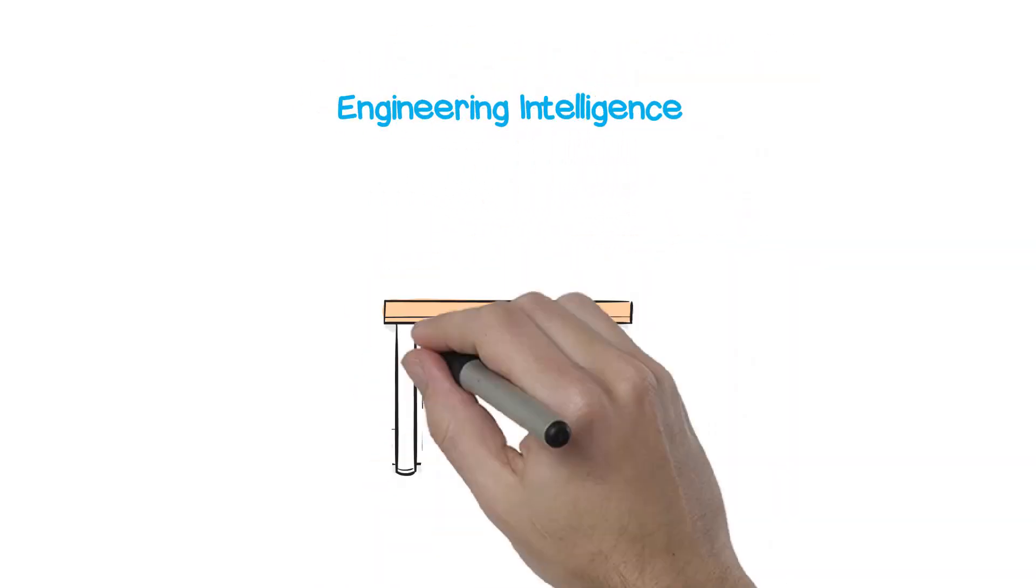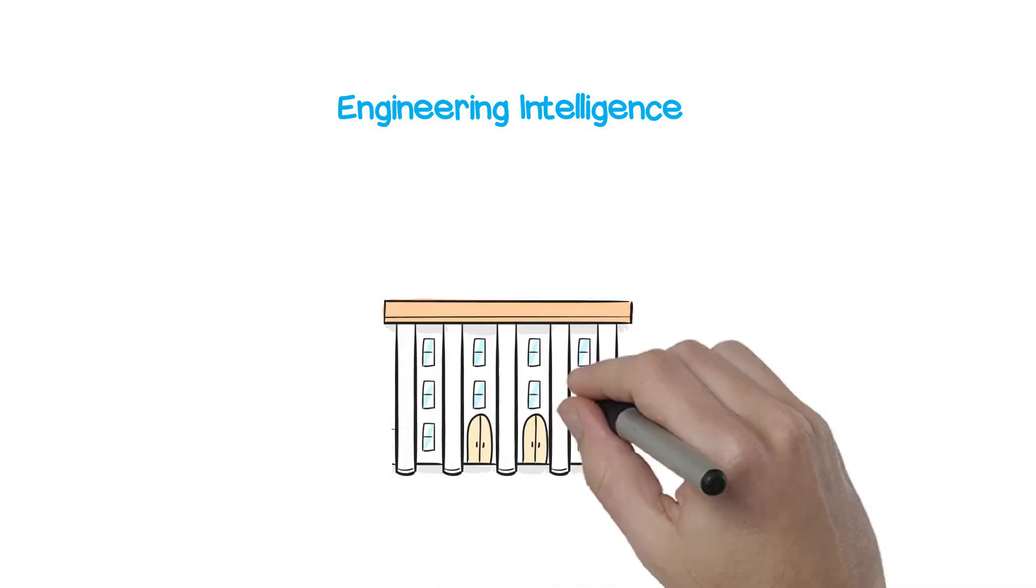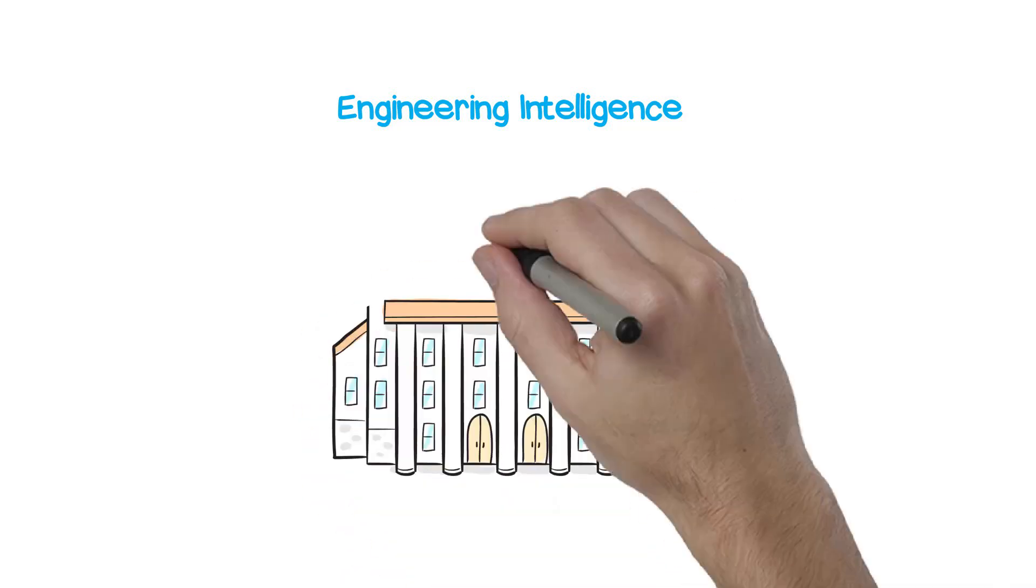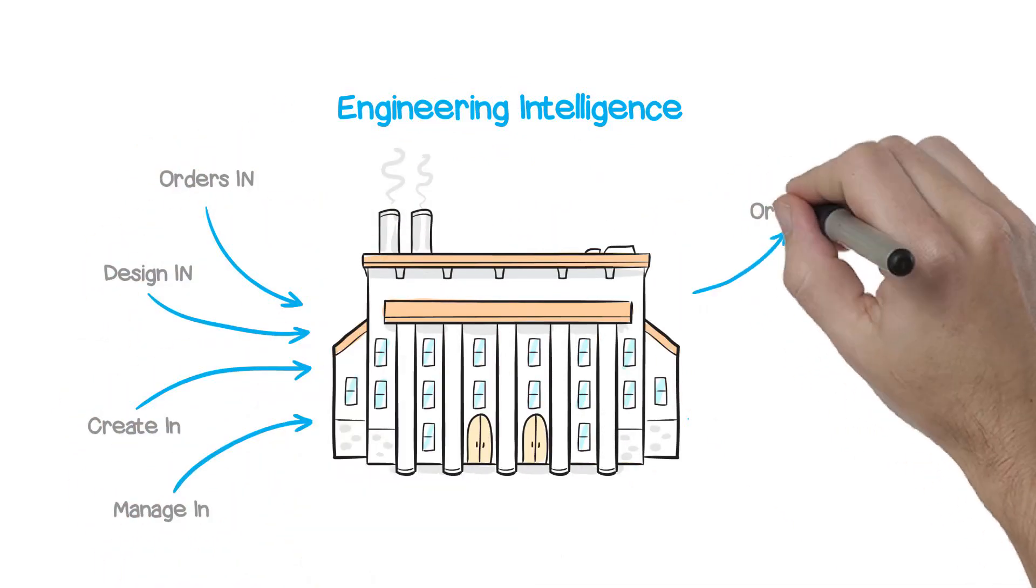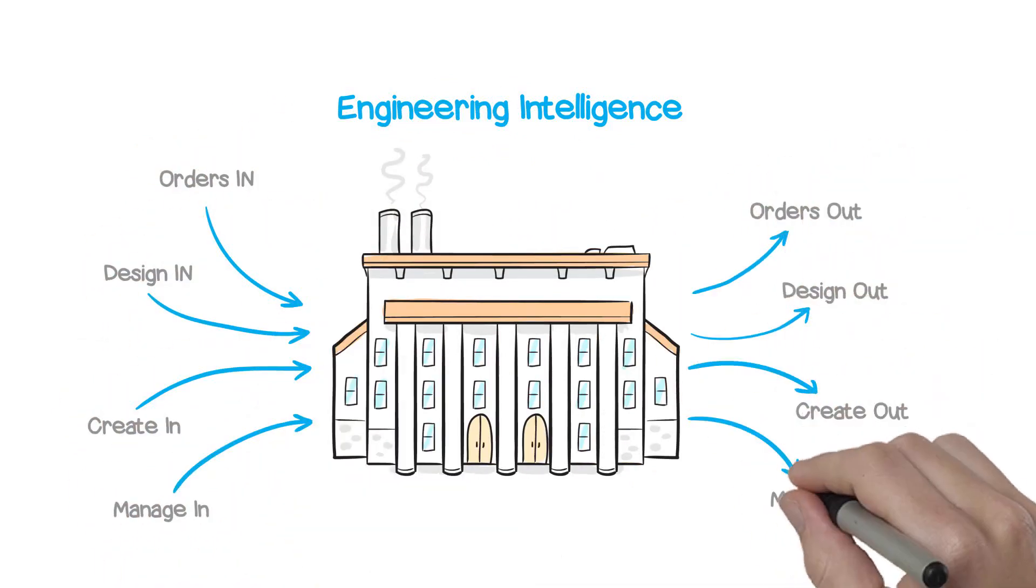This is also similar to lean manufacturing, but rather focused on engineering data, which we call engineering intelligence, and how it cycles through the various departments needed to sell, design, create and manage the products manufacturing companies produce.